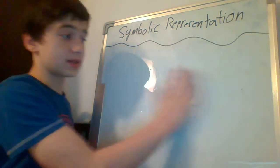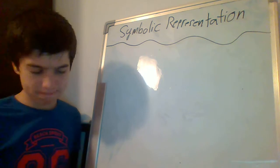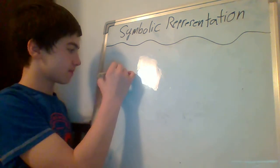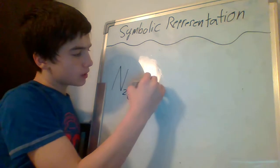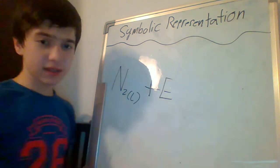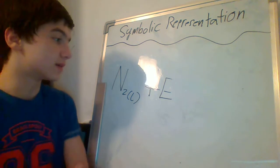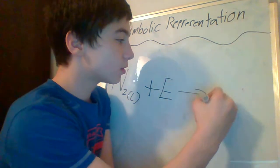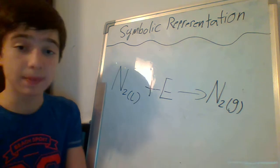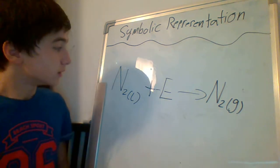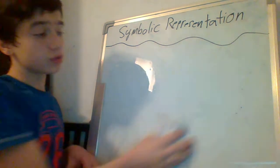Let's take another example: liquid nitrogen. We want to transform liquid nitrogen to gas. Can you guess the equation? We start with N2 liquid plus energy — because if you want to turn liquid nitrogen, which is really, really cold, to gas, you need to add energy, so you heat it up. And we're going to have nitrogen gas instead of liquid. So that's the symbolic representation of what's happening.